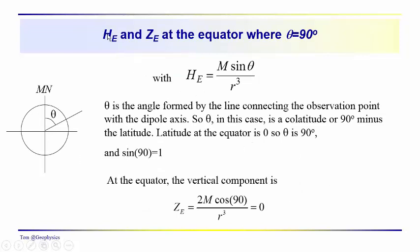Let's look at these two components of the Earth's main magnetic field — the horizontal and the vertical — at the equator, where theta, the co-latitude, equals 90 degrees. The horizontal component is the dipole moment times the sine of theta over R cubed. Since the sine of 90 degrees equals 1, H sub e equals M over R cubed. The vertical component involves cosine of 90 degrees, which equals 0, so Z sub e equals 0 at the equator.